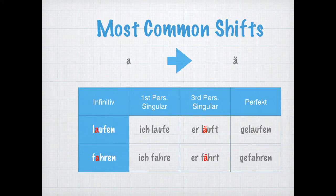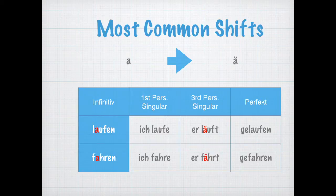Example number two is when an E becomes an E umlaut. Here we're looking at the E to E umlaut group — they both have a regular past tense but an irregular third person singular, which usually means an irregular second person singular too. So we're saying: laufen — to run — ich laufe, er läuft, gelaufen. And fahren — to drive — ich fahre, er fährt, gefahren.